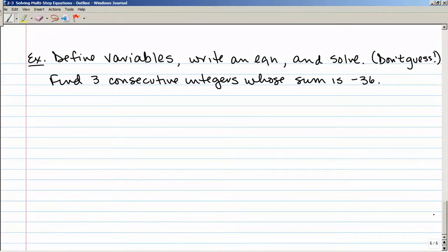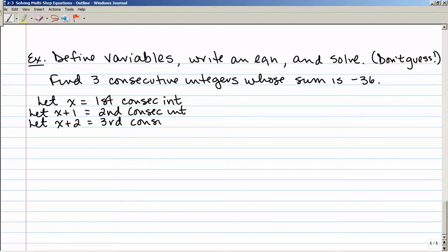So let's take a look at one example here. Define variables, write an equation, and solve this, and do not guess. Find 3 consecutive integers whose sum is negative 36. So I'm going to define my variables. I'm going to say let x equal the first consecutive integer. And now I need my next consecutive integer. And because these aren't necessarily even or odd, I'm just going to add 1. Let x plus 1 equal the second consecutive integer. And let x plus 2 equal the third consecutive integer. So I had to define my variables so I know what my x's and x plus 1 and x plus 2 are going to stand for.